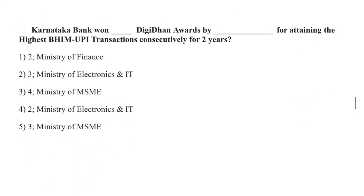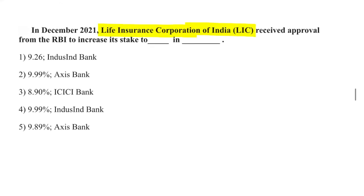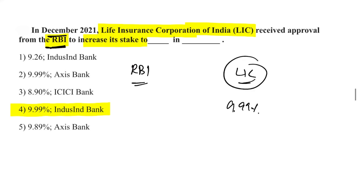Karnataka Bank won two digital awards from the Ministry of Electronics and Information Technology for attaining the highest BHIM UPI transactions consecutively for two years. The Life Insurance Corporation of India received RBI approval to increase its stake to 9.99% in IndusInd Bank.